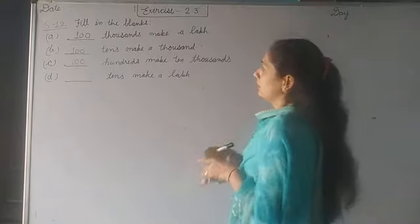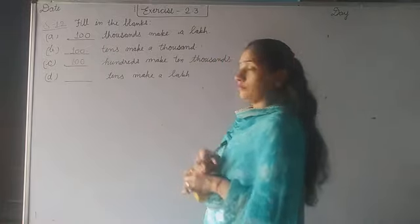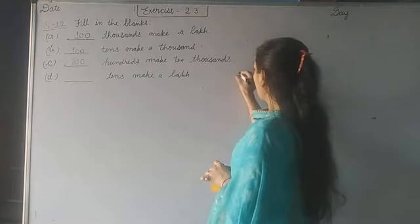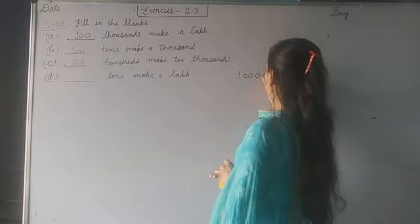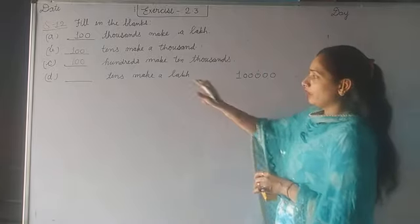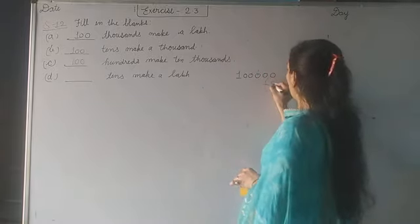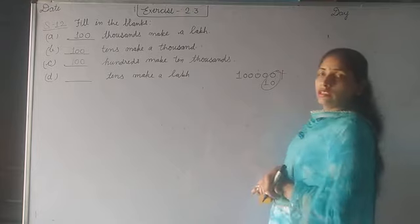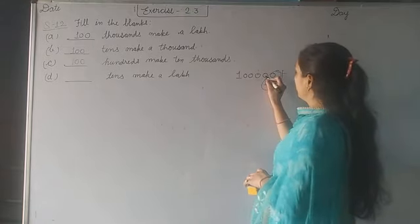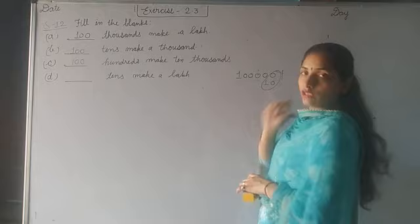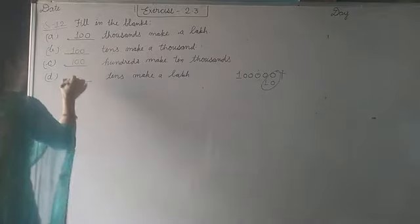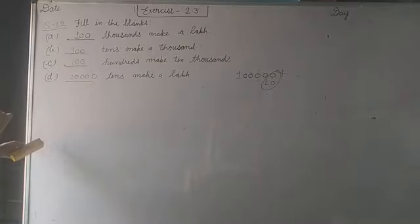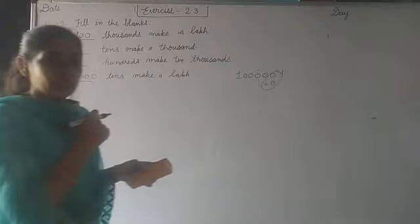Last one: dash tens make a lakh. How many tens make one lakh? Again write one lakh. In one lakh how many zeros are there? Five. Then ten. In ten how many zeros? One. It means from lakh we have to cross one zero. Then what is left? Ones, tens, hundreds, thousand, ten thousand. What is left? Ten thousand. So here comes ten thousand tens make a lakh.